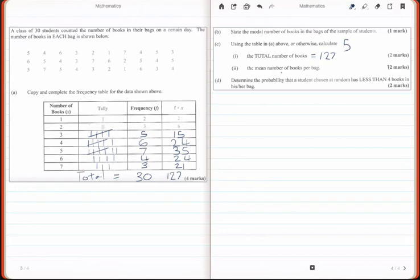Now C part two, the mean number of books per bag. Now to work out the mean, there's a particular formula you use when you have tables like this, and it is given as the sum of X times F divided by the sum of F. So you have the total number of books divided by the total frequency of which they occur. So that would be in our case these two numbers here that we just worked out.